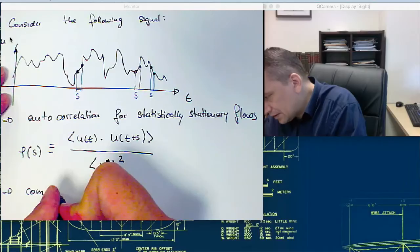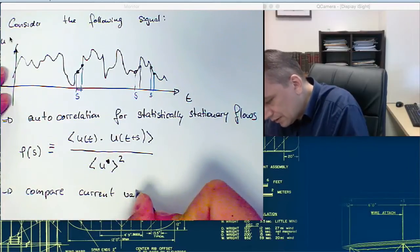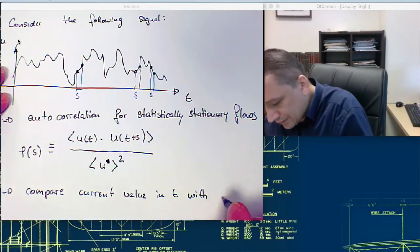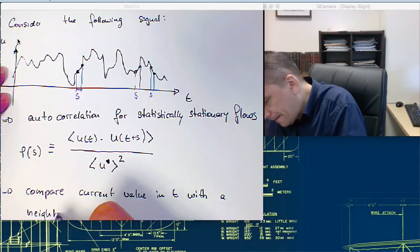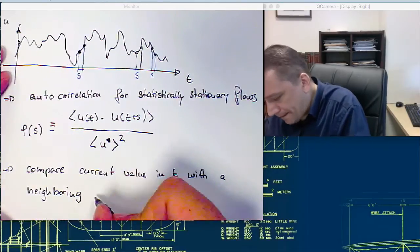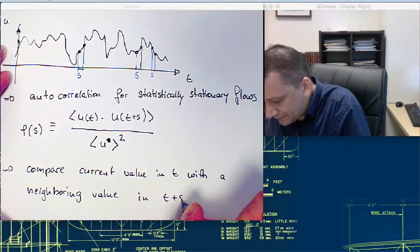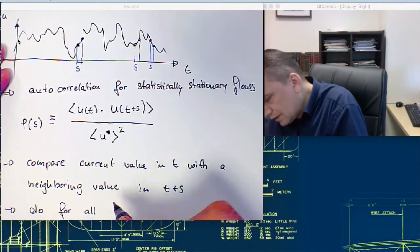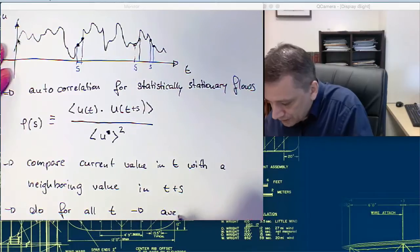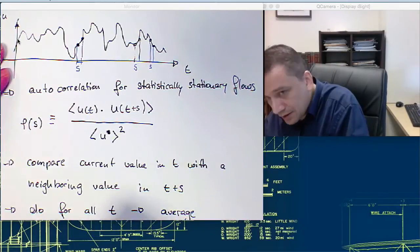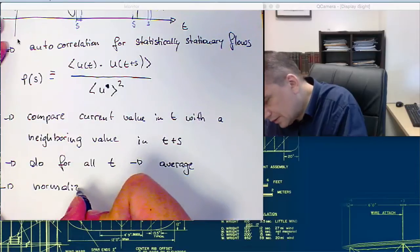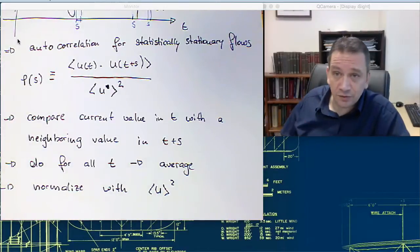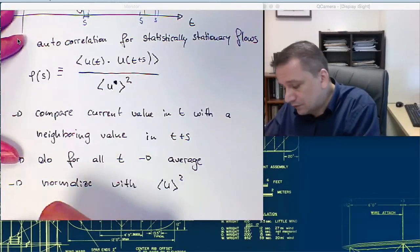Essentially, compare a current value in t with a neighboring value in t plus s. Do for all t, make an average, then normalize with <u²>. So, that's essentially what you're doing. And with that, you're getting a measure for the memory of the flow essentially.